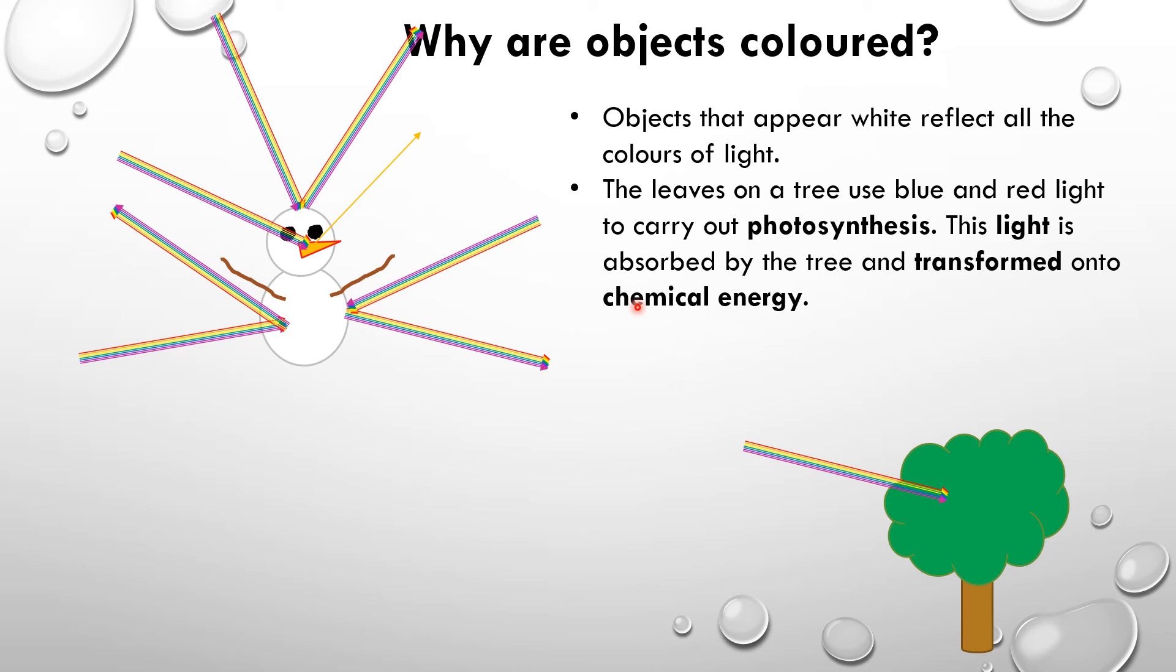Because they've absorbed all of that light to carry out the photosynthesis, the light that wasn't used, the green light, will be reflected off, and therefore the leaves on the tree appear green.